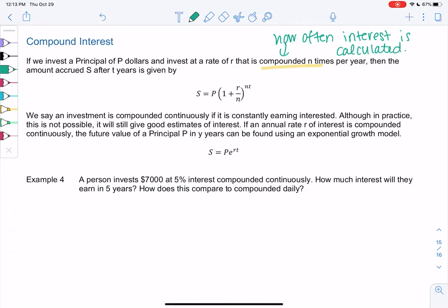Then the amount accrued s, the amount in the account after t years, is given by s equals P times 1 plus R over n in parentheses to the nt. So this is an exponential model that just doesn't use E.